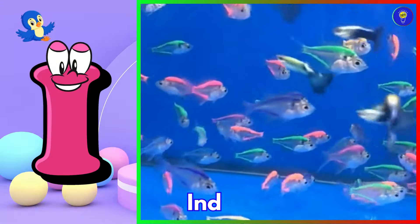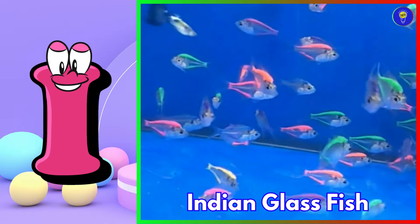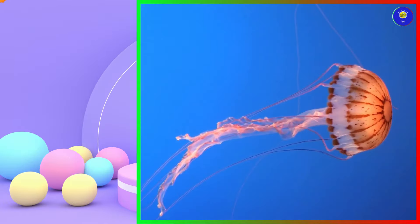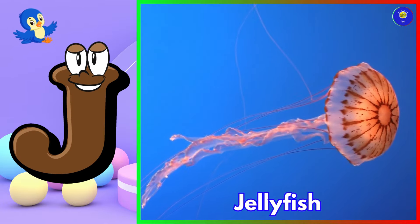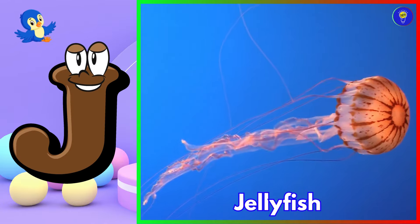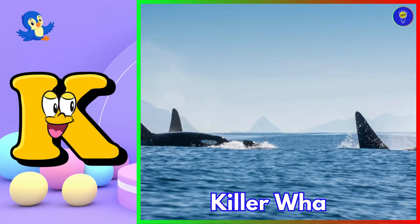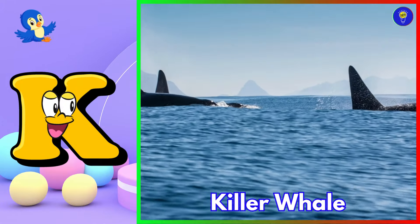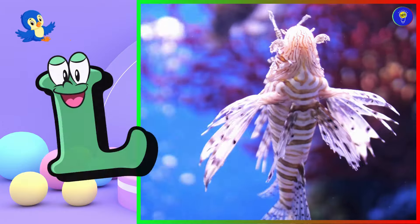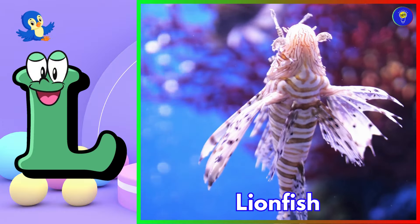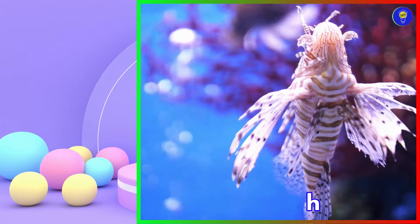I is for Indian glass fish. Eh, Indian glass fish. J is for jellyfish. Juh, jellyfish. K is for killer whale. Kuh, killer whale. L is for lionfish. Luh, lionfish.